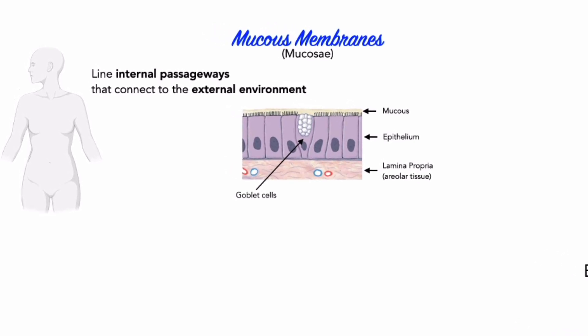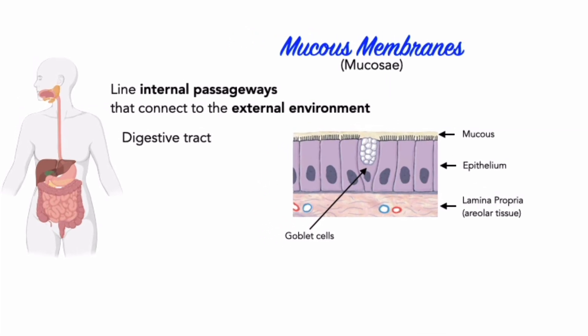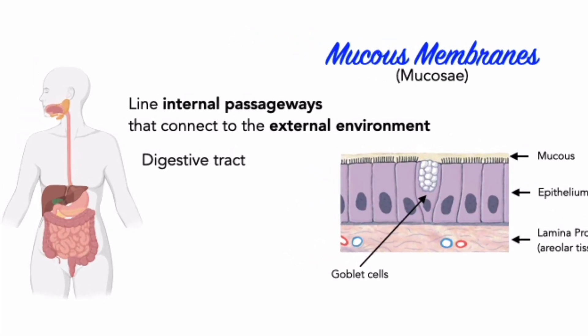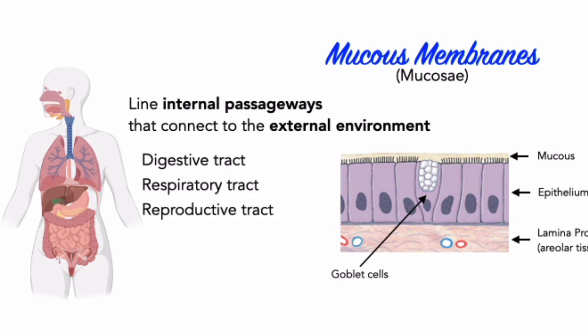Mucous membranes include those in the digestive system — for example, the lining of the oral cavity, the pharynx, the esophagus, the stomach, and the small intestines. The lining of the respiratory tract, including the nasal cavity, trachea, and bronchi, as well as the reproductive and urinary tracts, are all mucous membranes.